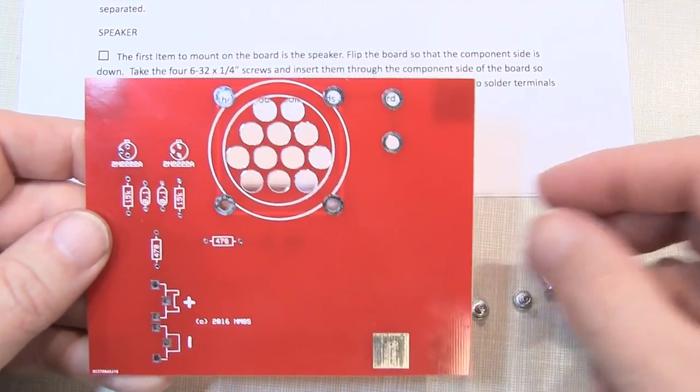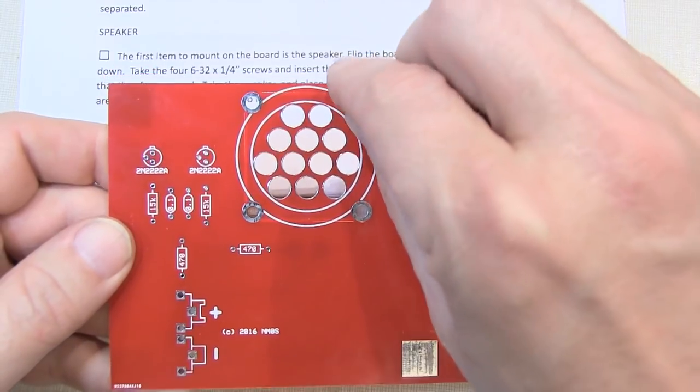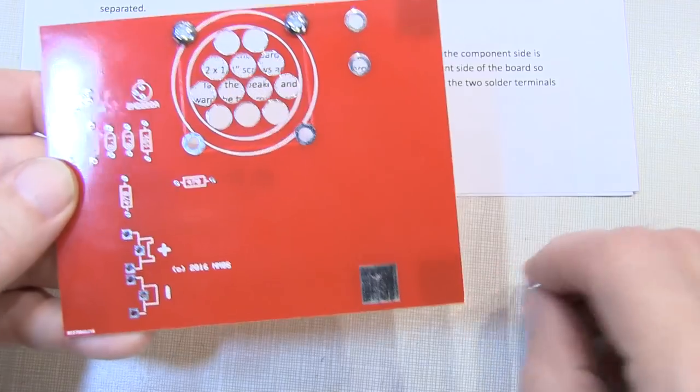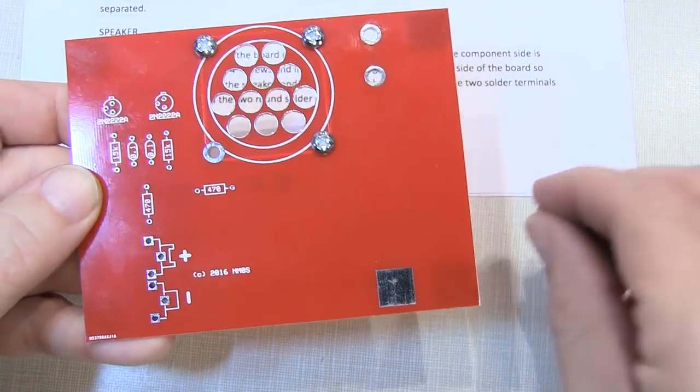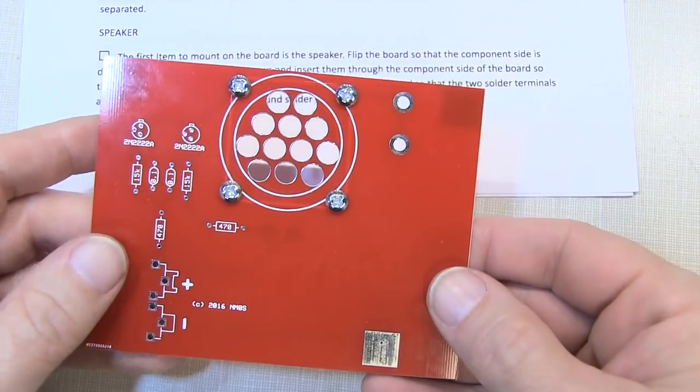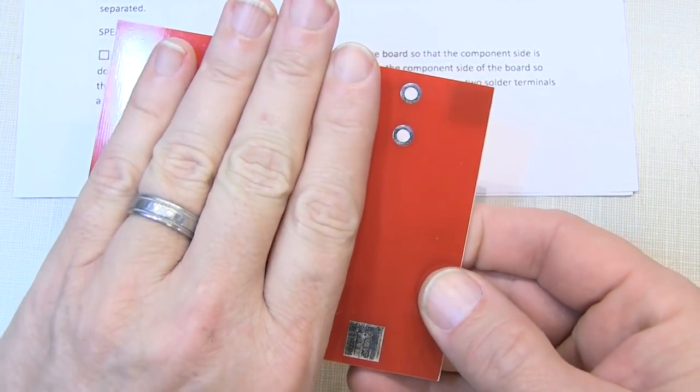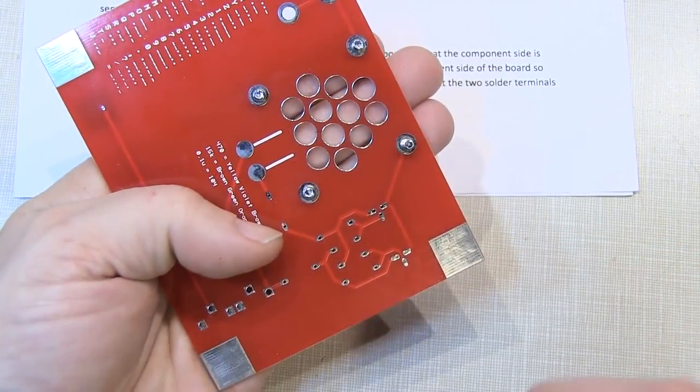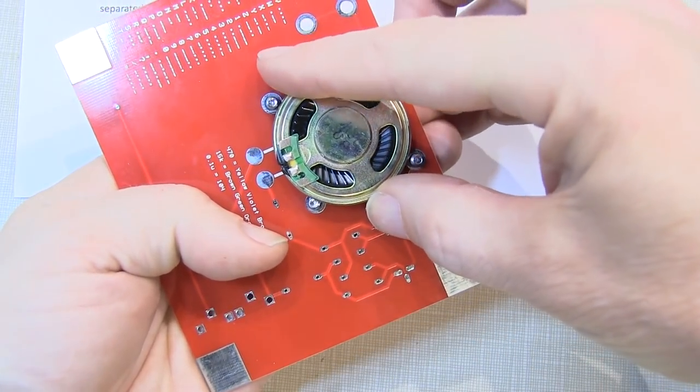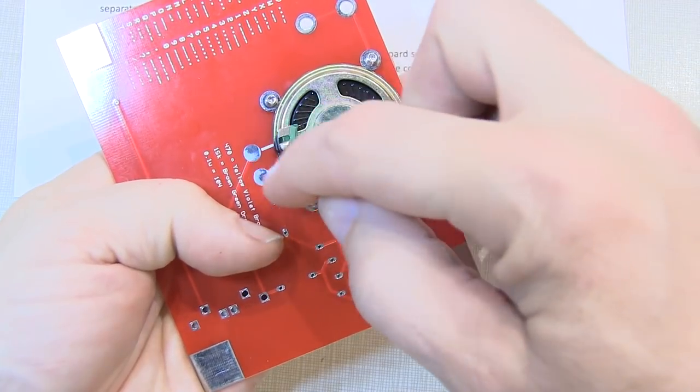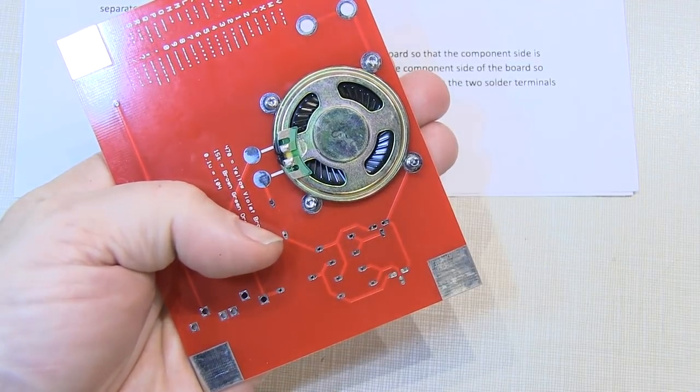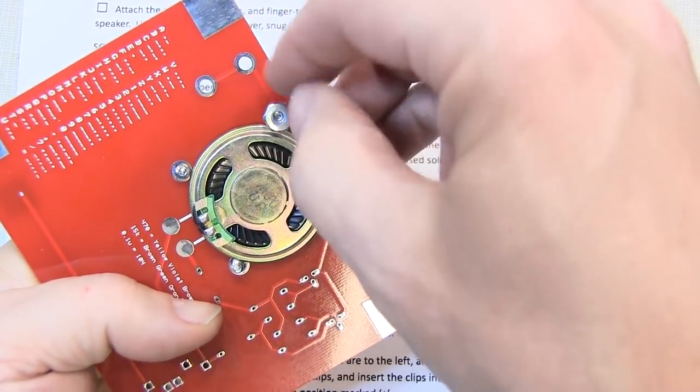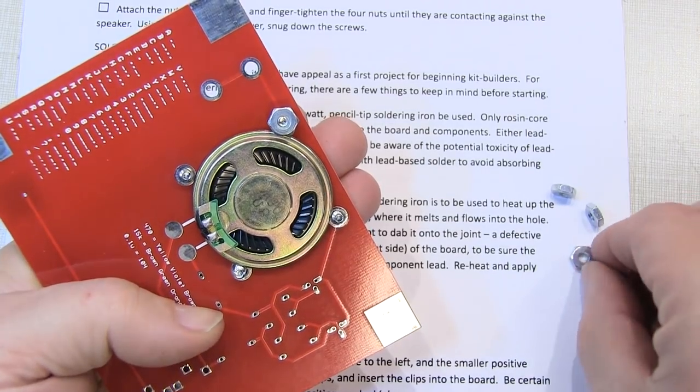The first step is to install the speaker, and we start by putting four screws through the component side of the board surrounding the speaker. Then carefully place your hand across those screws so they don't fall out and flip the board over. And then place the speaker in the middle of the four screws with the terminals facing the solder pads on the board. And take four of the hex nuts and start them on each of those screws until they're just touching the speaker.